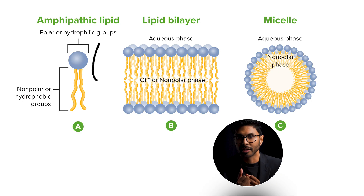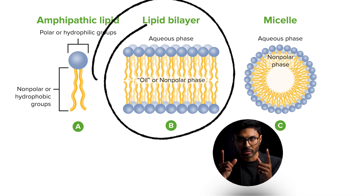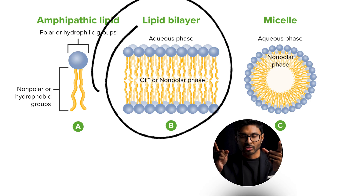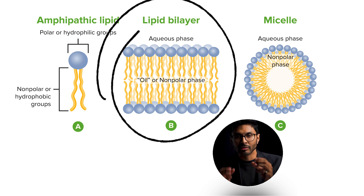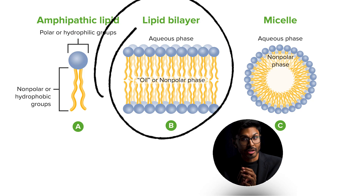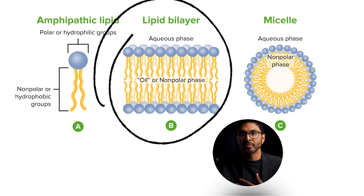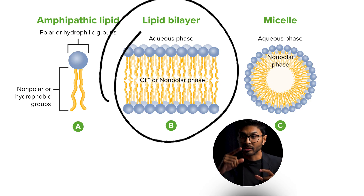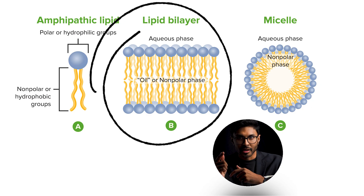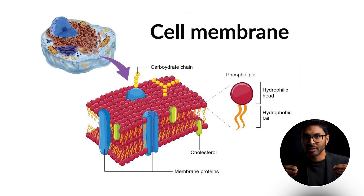When phospholipids are placed in water, they spontaneously arrange themselves into a bilayer. The hydrophilic heads interact with water and face outward toward the watery environment both inside and outside the cell. The hydrophobic tails clump together to escape water and face inward, shielded from the surrounding water by the polar heads. The result is a stable membrane with a hydrophobic core that acts as a barrier — and this amphipathic nature gives it unique properties that are essential for life.